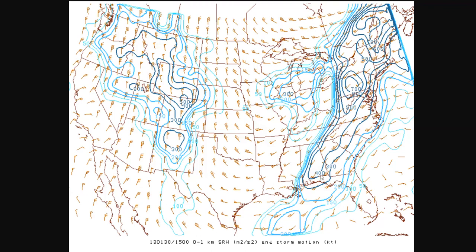Looking at the storm relative helicity for Adairsville: about 400, zero through one kilometer, in meters squared per second squared — with maybe a spike of 430 to 450 somewhere in there. That gives you a bit more background on the environment.